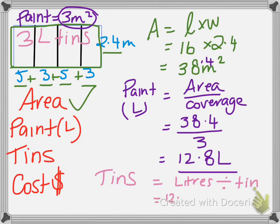And we are going to divide that by how many litres in one tin, and that would be 12.8 litres that we found before, divided by 3, which means we need 4.27 tins.